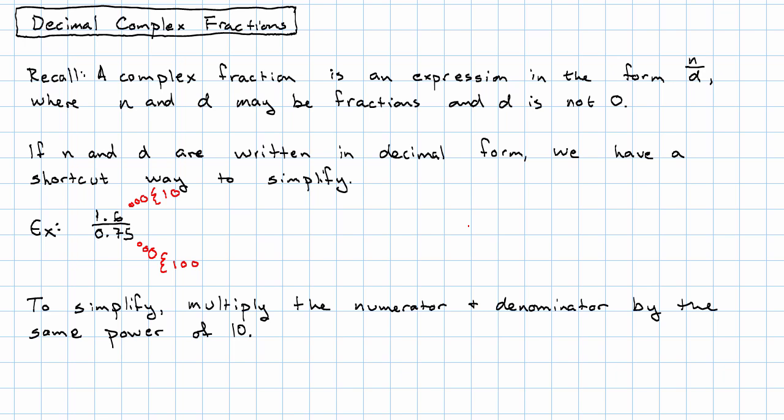Multiplying 1.6 by 10 would get us a whole number. Multiplying 0.75 by 100 would get us a whole number. We have to multiply the numerator and denominator by the same thing, however, if we're going to get an equivalent fraction.